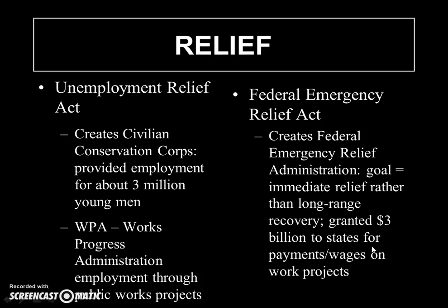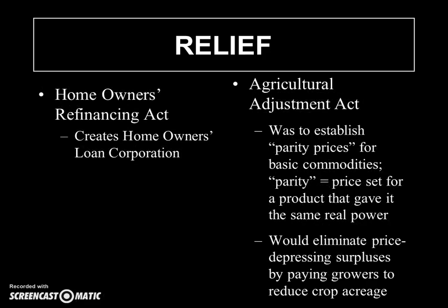For relief, you got the Unemployment Relief Act and the Federal Emergency Relief Act, which created immediate relief for people and put people immediately to work. It created the Civilian Conservation Corps to employ three million men, and the Works Progress Administration, which would create public works projects all over the nation — a lot of dams, a lot of bridges. The Federal Emergency Relief Act also gave people essentially relief checks — some form of welfare — to get them through the early stages of the Depression. The Homeowners Refinancing Act allowed people to refinance their homes and stay in them. The Agricultural Adjustment Act established parity prices for basic commodities, giving real buying power by setting price supports — for example, a minimum price for wheat when the market price tanked.